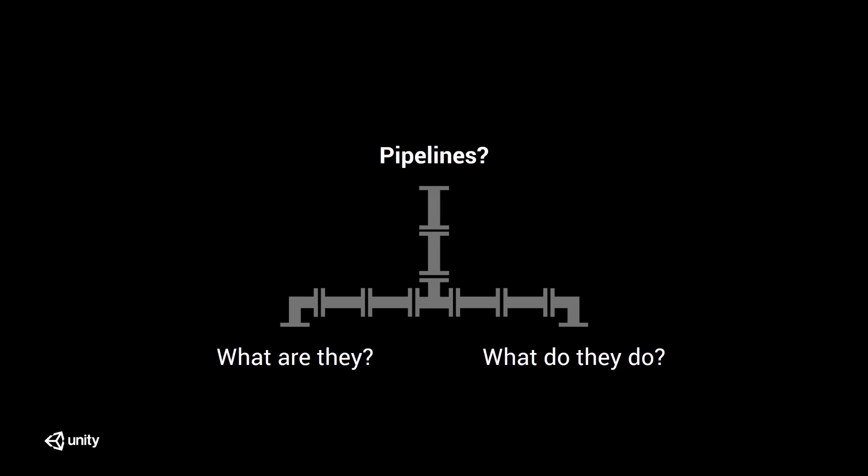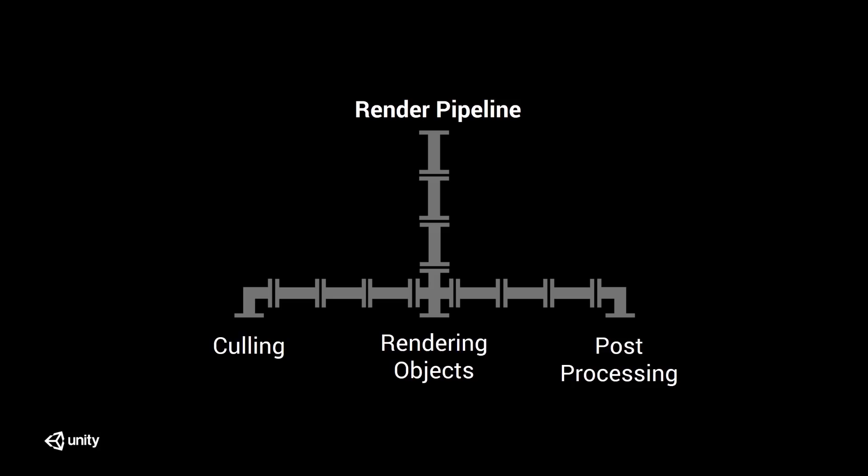I remember when I was first told about the new pipelines, my first initial questions were: what are they and what do they do? So I'm going to keep things nice and simple. What is a render pipeline? Well, a render pipeline in general terms is the number of techniques used to get an object onto screen, and it roughly encompasses culling, rendering objects, and post processing — and of course these can be subdivided into their own different categories.